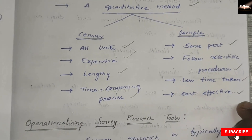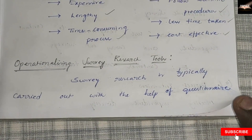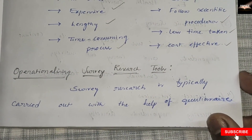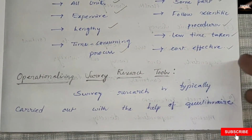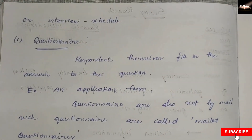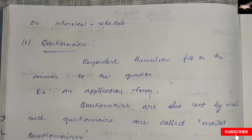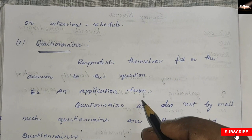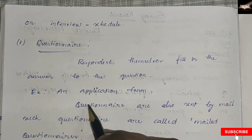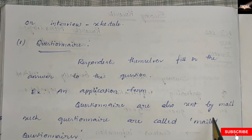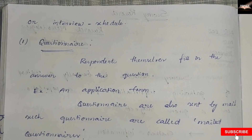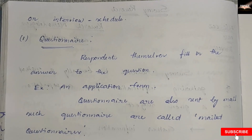Coming to operationalizing survey research tools: survey research is typically carried out with the help of questionnaires and direct interviews. Survey research tools are the tools used to collect data. The first tool is the questionnaire, where respondents themselves fill in the answers — for example, an application form filled in offices. Questionnaires are also sent by mail; such questionnaires are called mailed questionnaires — for example, Google Forms, which we fill for surveys conducted by many companies and offices.